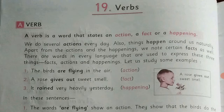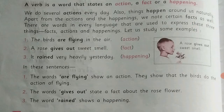Let us study some examples. A verb is a word that states action, fact, or happening. We do several actions every day. Things happen around us naturally sometimes, and we notice some facts. Examples: 'Birds are flying in the air' — action. 'A rose gives a sweet smell' — fact. 'It rained very heavily yesterday' — happening.